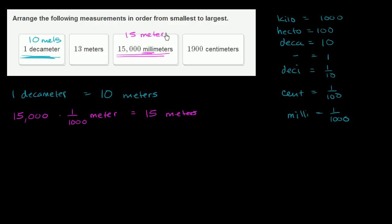Another way of thinking about it: 1,000 millimeters equals a meter. Let's divide this into groups of 1,000. This is literally 15 groups of 1,000 millimeters, so that's 15 meters.